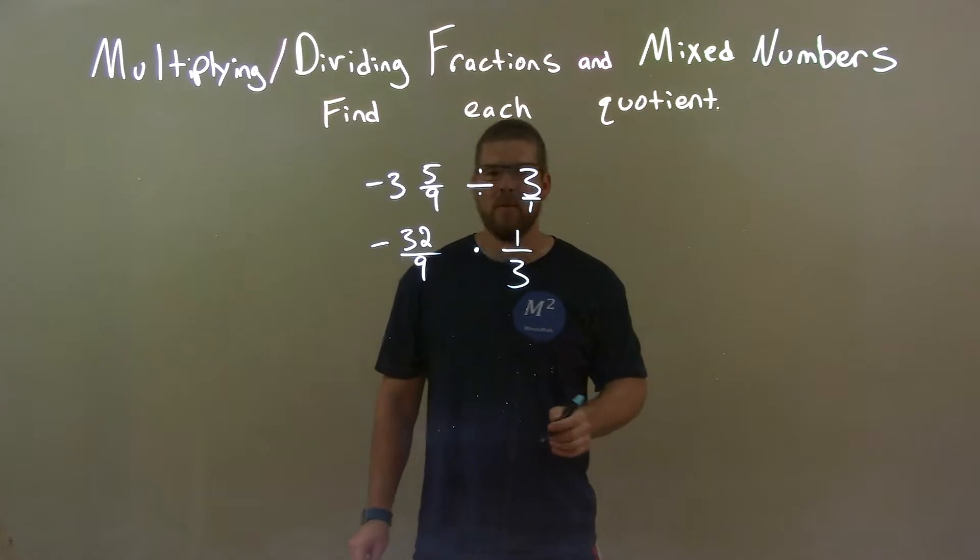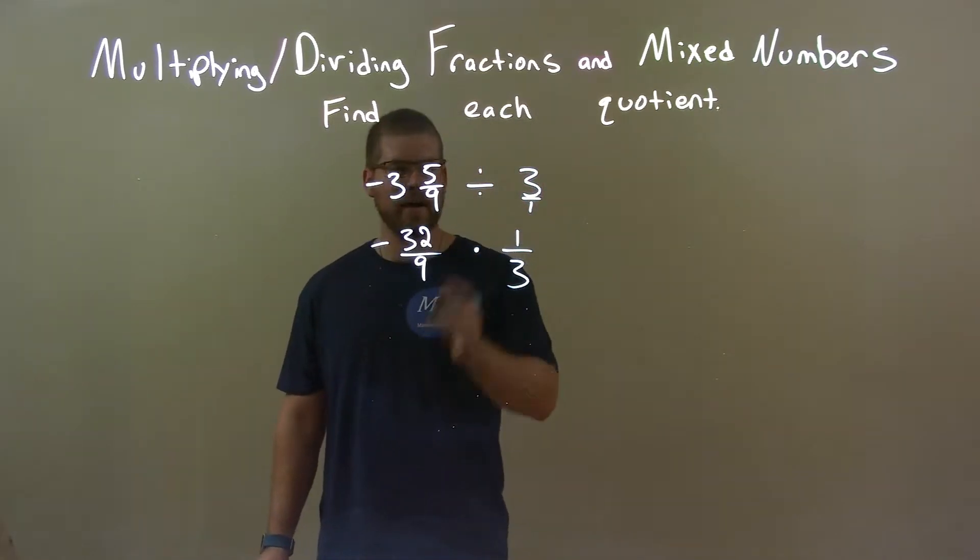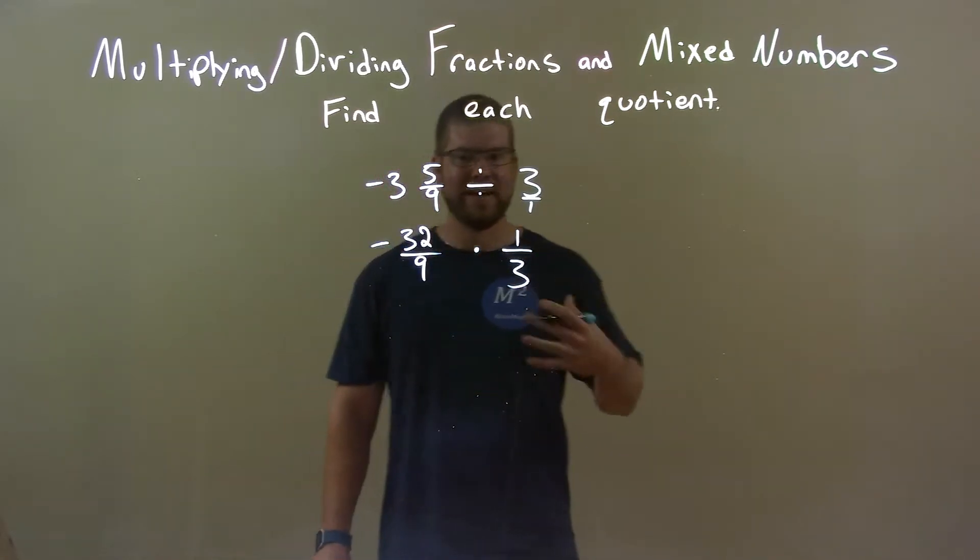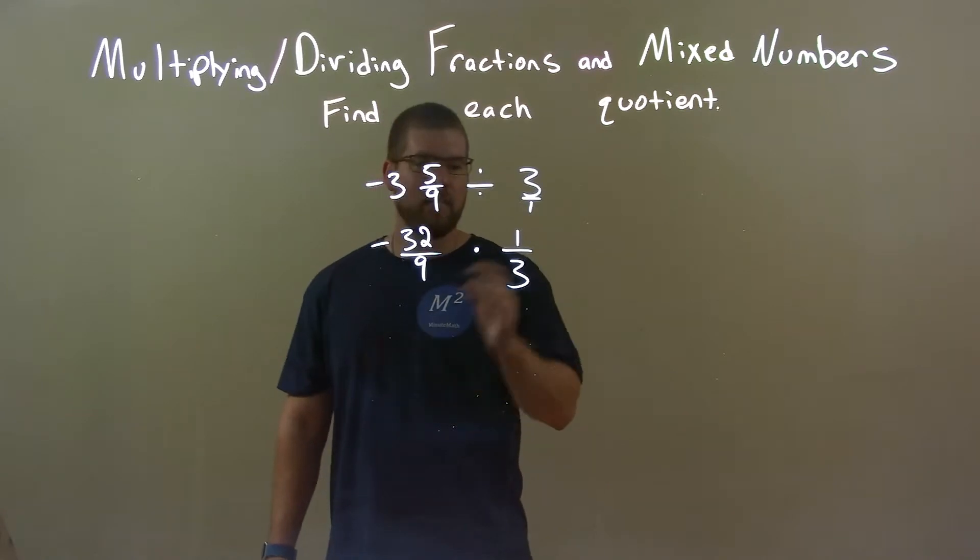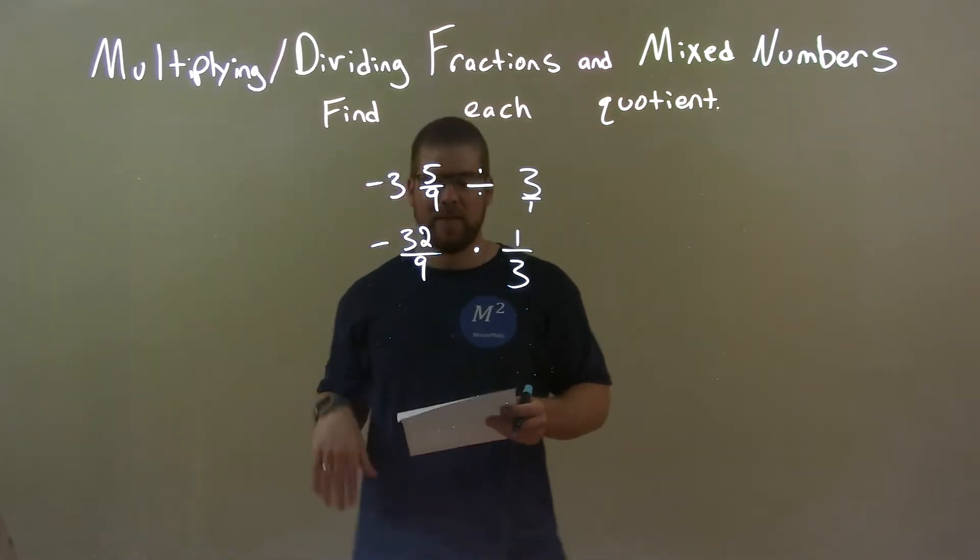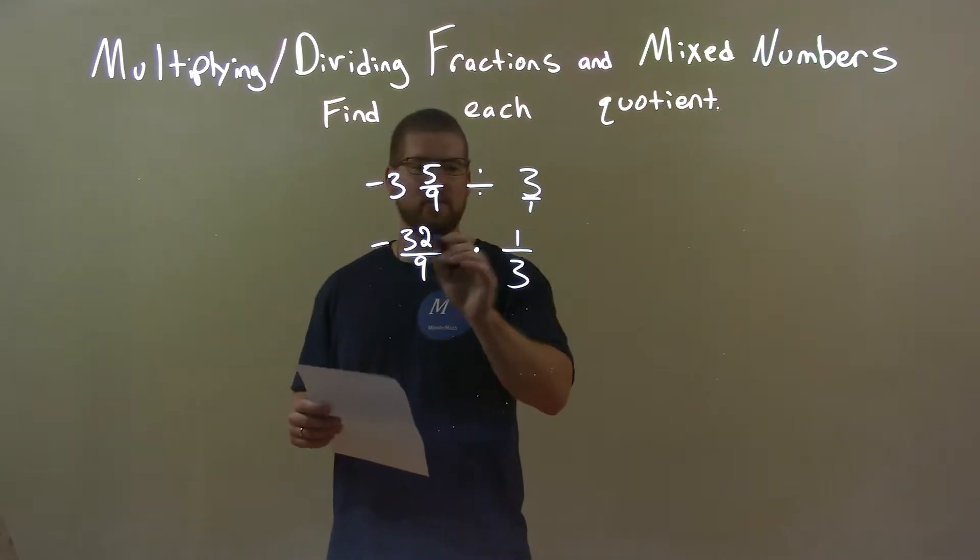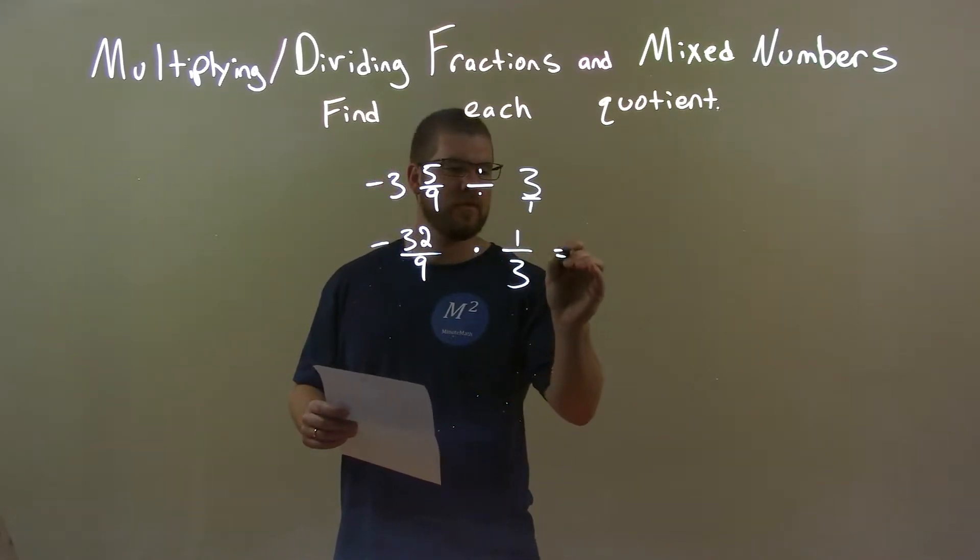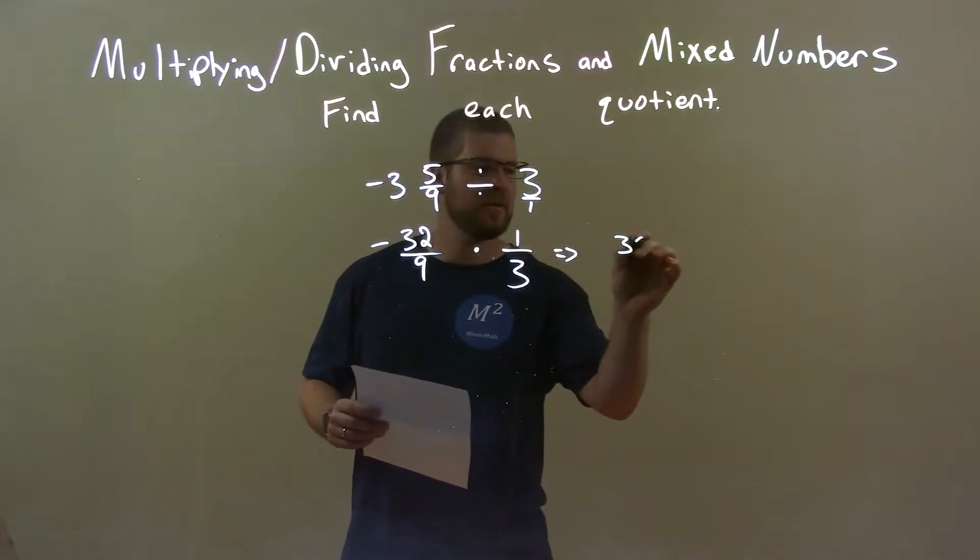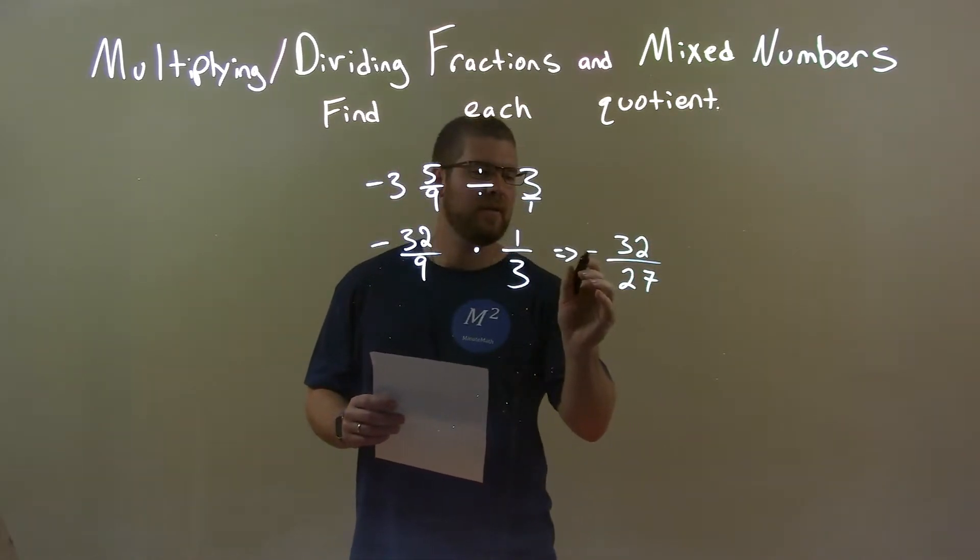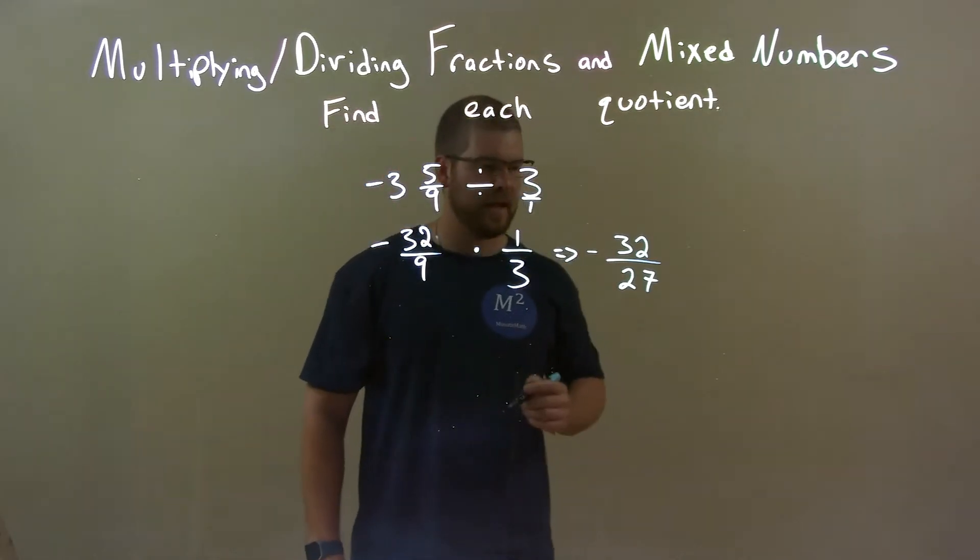So now we have 32 over 9 times 1 third. Can this simplify in any way? Unfortunately no, I don't see any way that this can simplify. So we're stuck multiplying across the numerator and multiplying across the denominator. Negative 32 times, or 32 times 1 is 32, and 9 times 3 is 27. And don't forget negative. Negative times the positive is a negative.